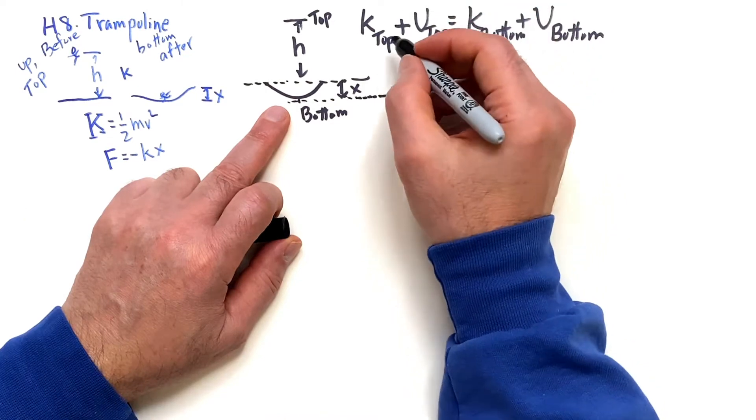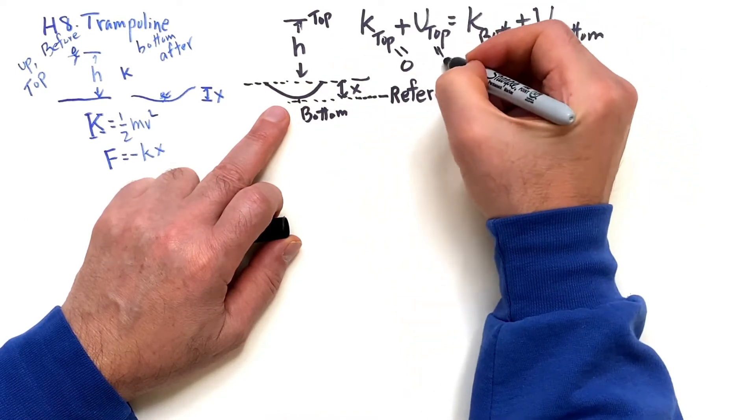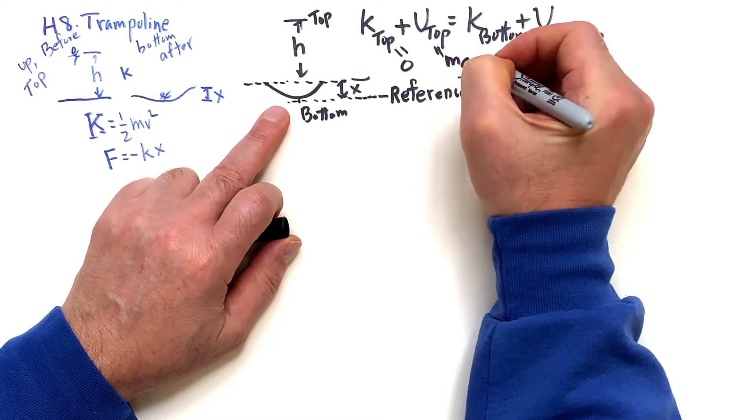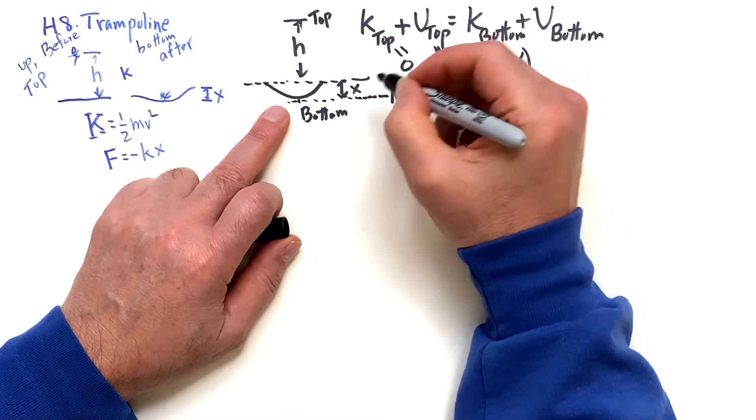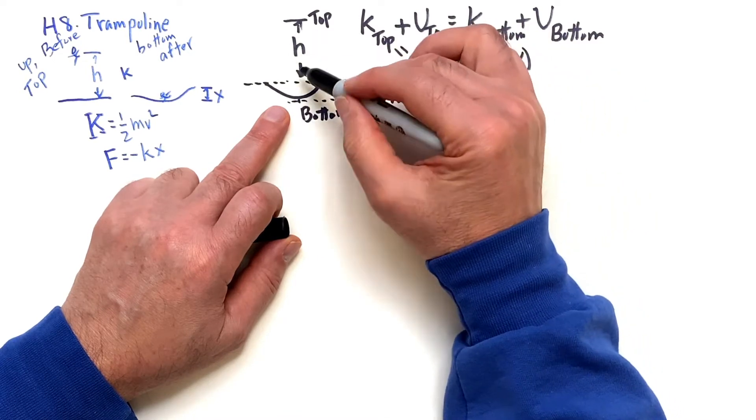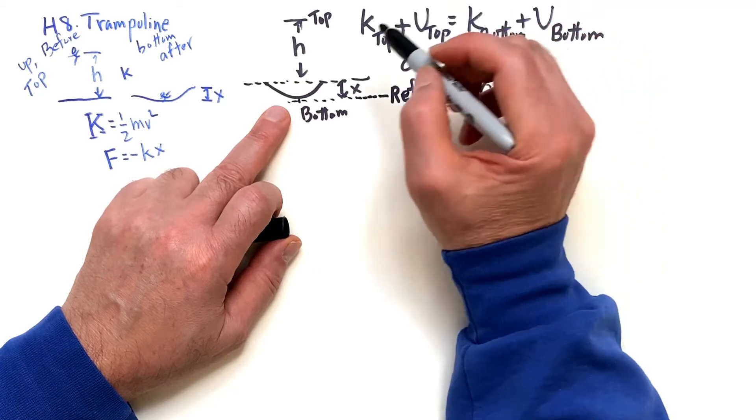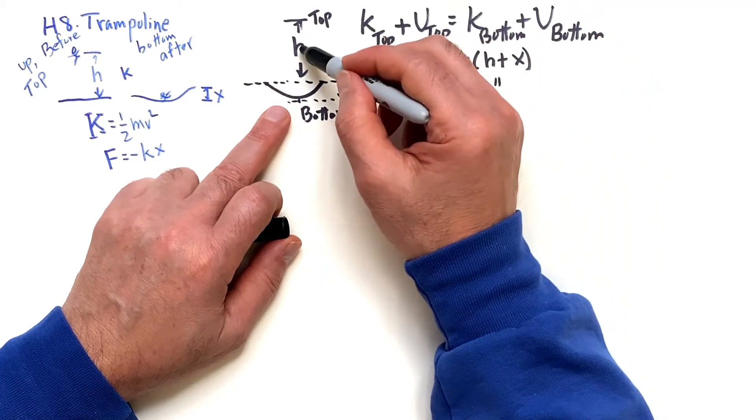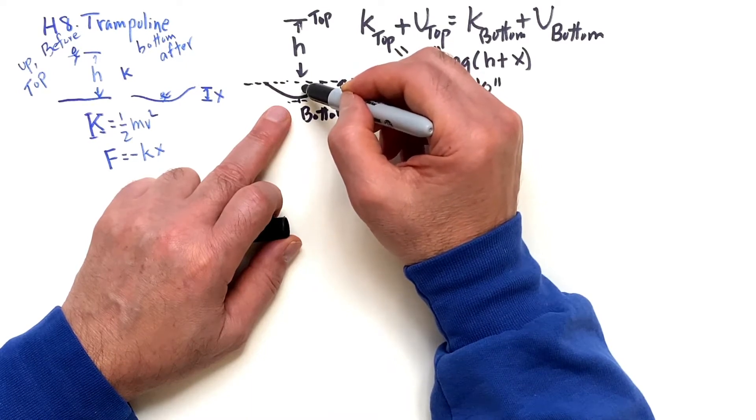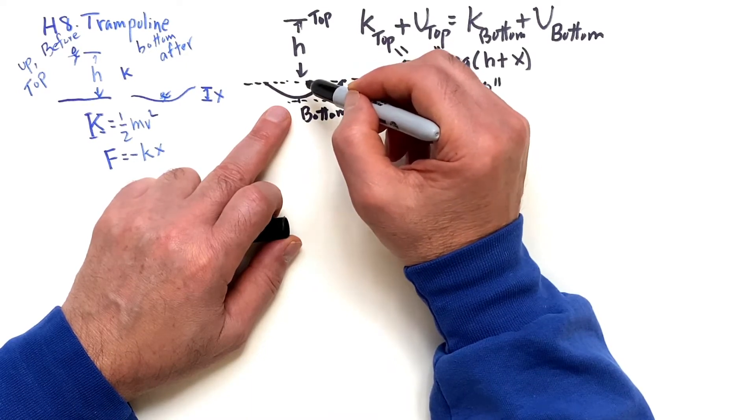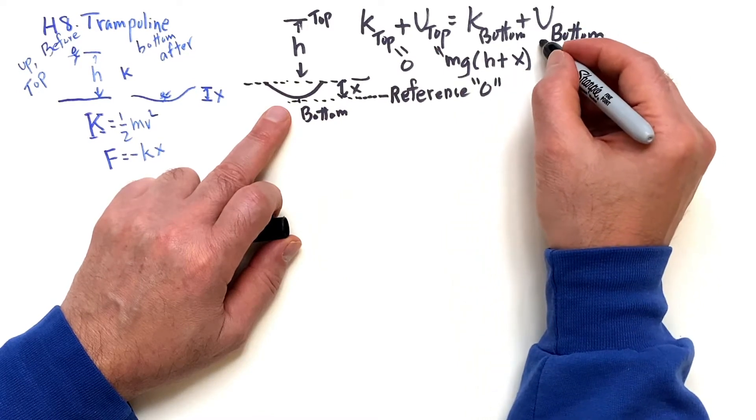So at the top, I'm going to drop from rest, so that's zero. And at the top, I have mg h plus x. That's important. I think when I first did this problem, I didn't do that many years ago. Because you're going to fall h plus x. So when you're pressing in this trampoline, your gravity is still working on you. So you're still getting some effect from gravity. So this is at the bottom.